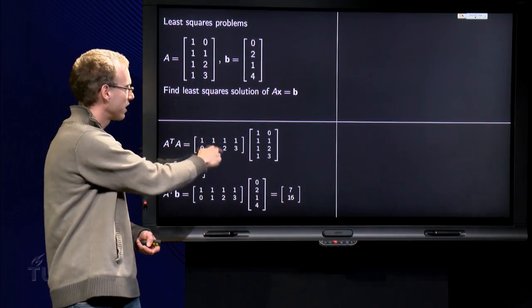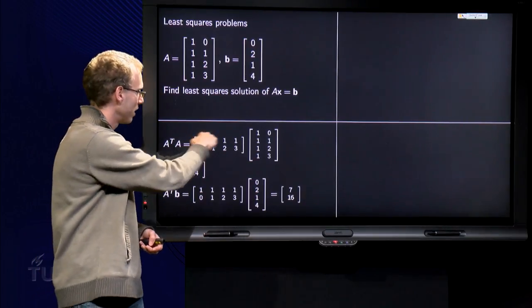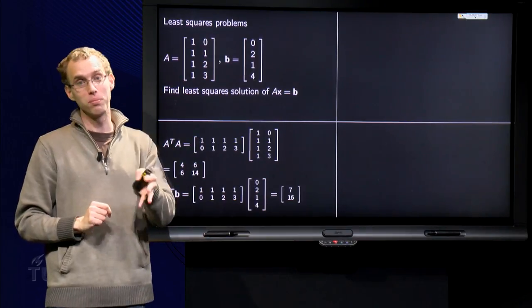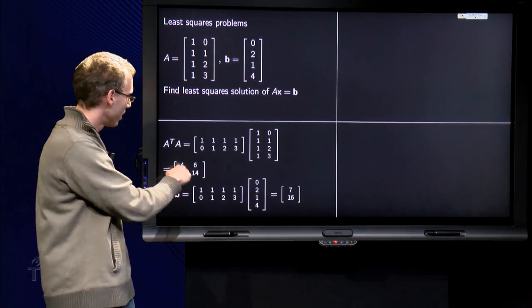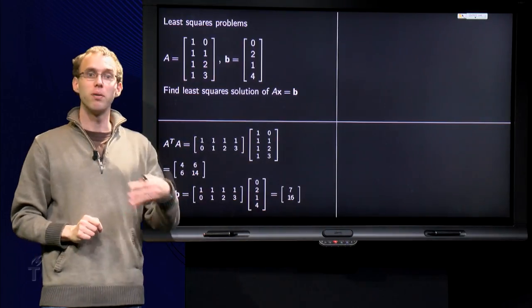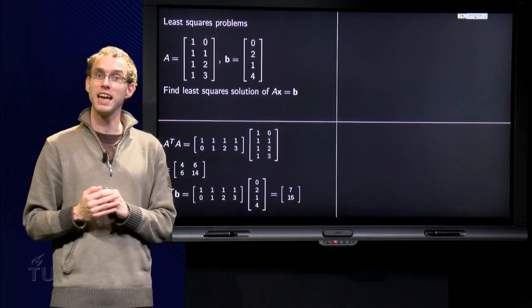Over here we have A transpose times A. To compute the matrix product, for example the first element: inner product of [1,1,1,1] with [1,1,1,1] equals 1 plus 1 plus 1 plus 1 equals 4. And the term over here, inner product of this with that one, 0 plus 1 plus 4 plus 9 equals 14. So there we have our A transpose times A.